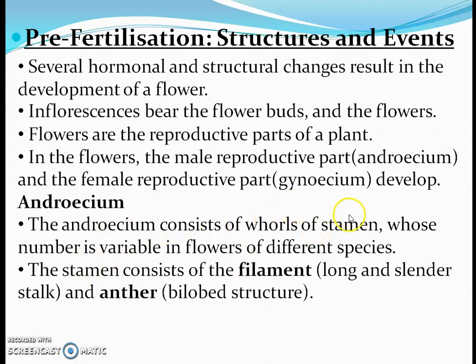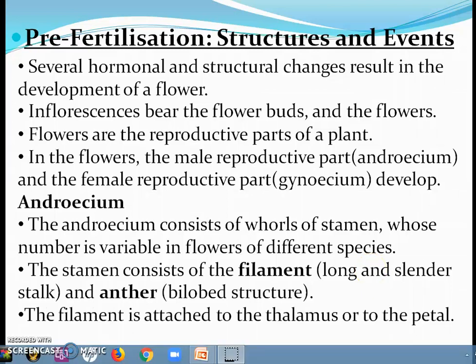The Androecium consists of whorls of stamens, whose number is variable in flowers of different species. The stamen consists of the filament — which is a long and slender stalk-like structure — and the anther, which is a bilobed structure. The filament is attached to the thalamus or to the petal.